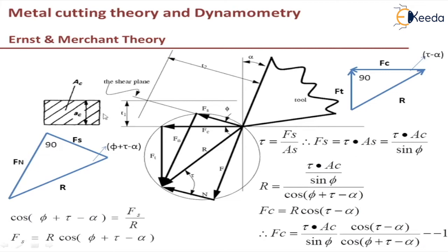By this sketch you can see this is the area of the chip. I can write instead of As, Ac by sin phi. By the equation for Fs, R will equal Fs by cos(phi + tau - alpha). Instead of Fs I am substituting tau Ac by sin phi. So this is the Fs part.